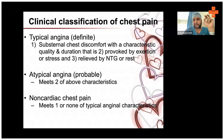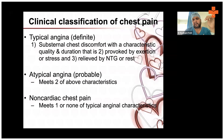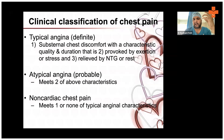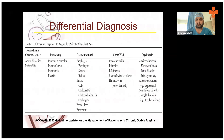If all three answers are positive — substernal location, provoked by exertion, relieved by rest or nitroglycerin — you are dealing with typical or definite classical angina. If only two of the three are present, it is atypical angina. If only one characteristic is met, it is possibly a non-cardiac chest pain. It is very simple: ask the patient these three questions and categorize accordingly — typical, atypical, or non-cardiac chest pain.